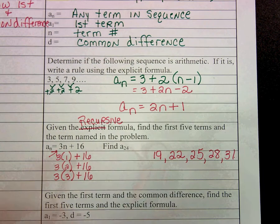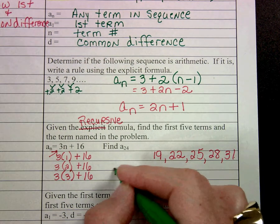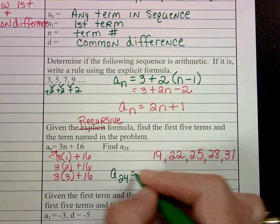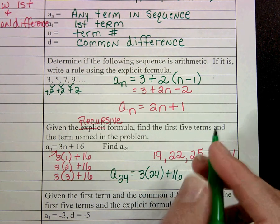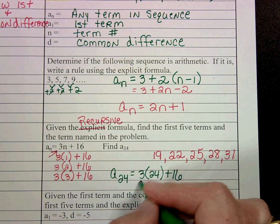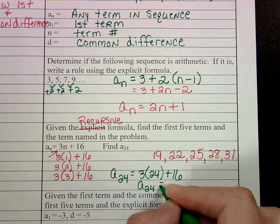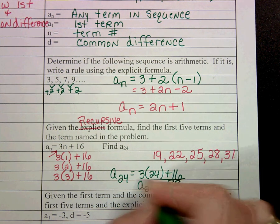And now if I want to find a sub 24, again, all we have to do is plug 24 in for n and calculate it. And that would end up being 88. So the 24th term is 88.